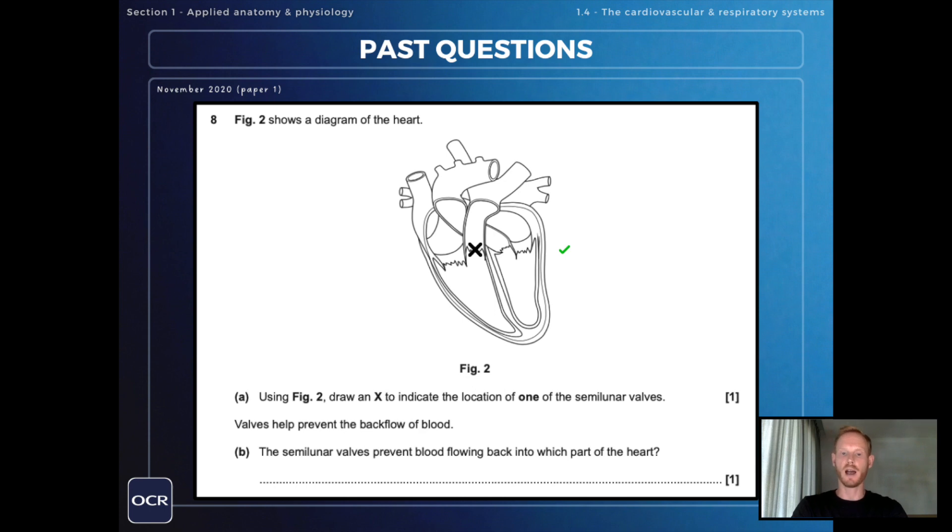The second part of the question: valves help prevent the backflow of blood. The semilunar valves prevent blood flowing back into which part of the heart? And that is the ventricles.